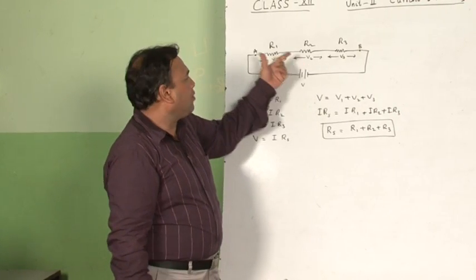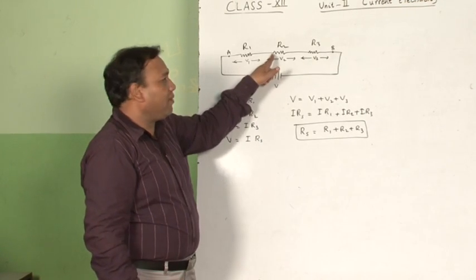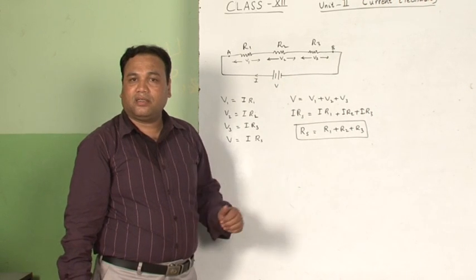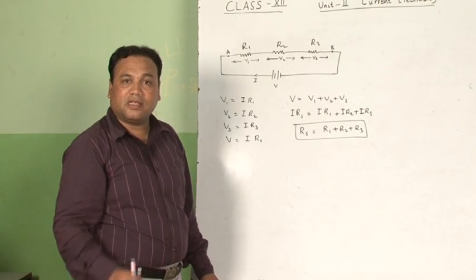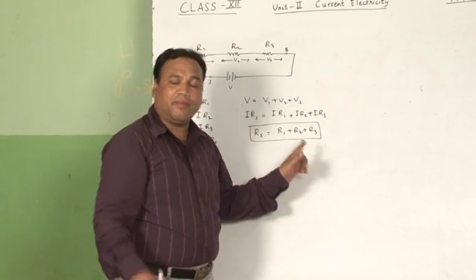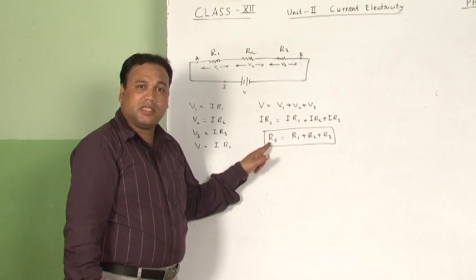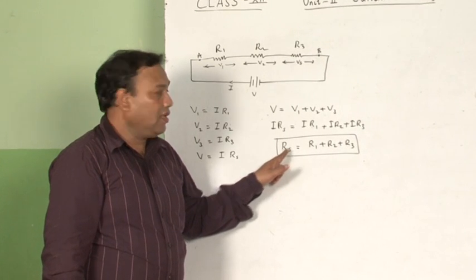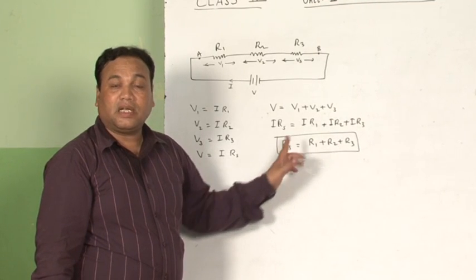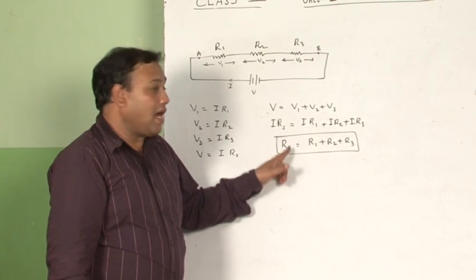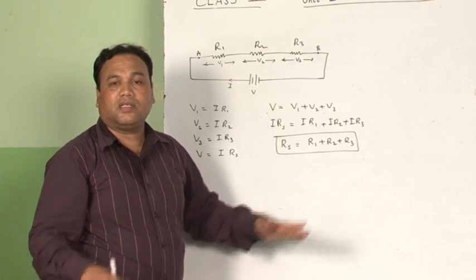In series combination, remember the potential drop across each resistor is divided. If any one resistor is not working, the entire combination will not work — these are the disadvantages. However, if you want high resistance from small resistors, series combination gives you more resistance. The effective resistance in series is greater than the greatest individual resistance. For example, if R1=1, R2=2, R3=3, then Rs = 6, which is greater than 3.